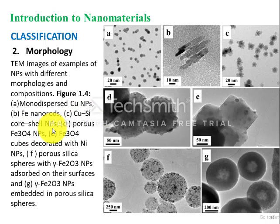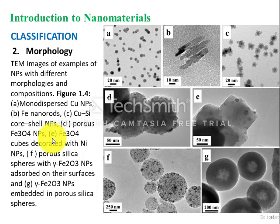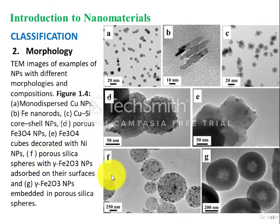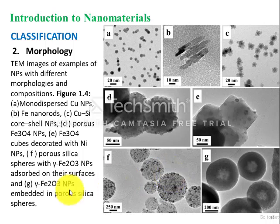Figure D shows porous iron oxide nanoparticles. Figure E represents iron oxide cubes decorated with nickel nanoparticles. Figure F represents porous silica spheres with alpha iron oxide nanoparticles embedded in the pores of silicon oxide. Figure G shows gamma iron oxide nanoparticle spheres.